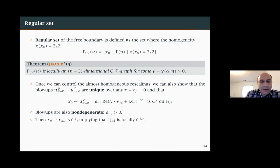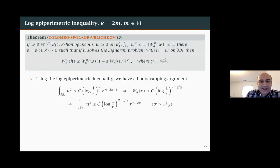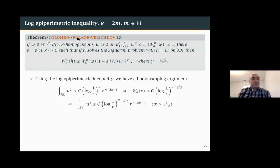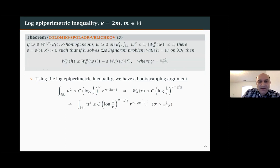Let me wrap up. Once we have the control of blow-ups in the singular case, we can prove that Σ_{2m} = Γ_{2m} is contained in a countable union of d-dimensional manifolds of class C^{1,log}. The logarithmic modulus of continuity comes from the logarithmic estimates we had. Sorry for going over time. Thank you.